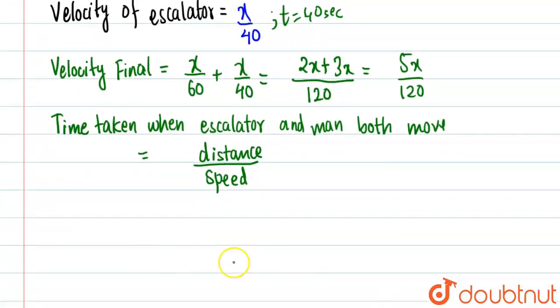This will be distance by speed. So what will this become? Distance is still x and speed is 5x by 120. So from here we get 120 by 5, which gives us 24 seconds.